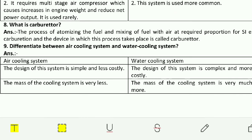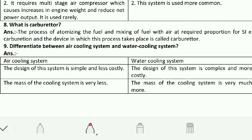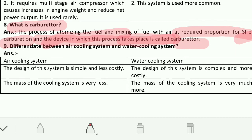The eighth question is: what is a carburetor? The carburetor is used only in SI (spark ignition) engines, i.e., petrol engines. The process of atomizing the fuel and mixing it with air in the required proportion for an SI engine is called carburetion, and the device in which this process takes place is called a carburetor. The proper mixing of air and fuel takes place in the carburetor.